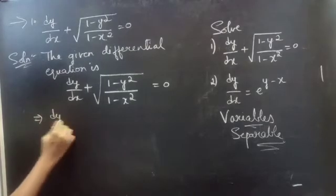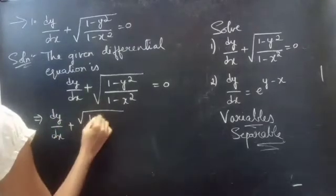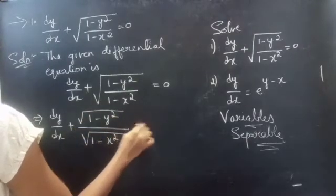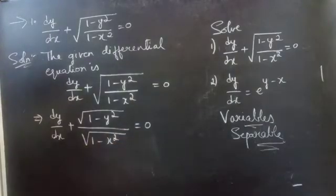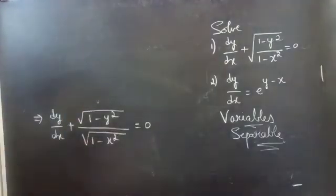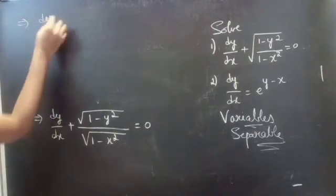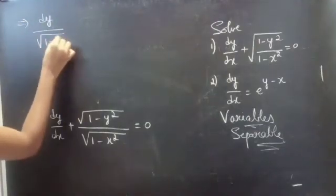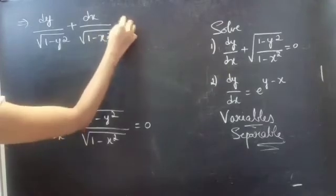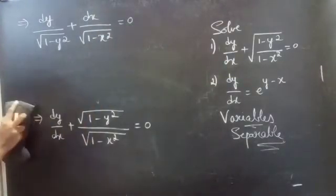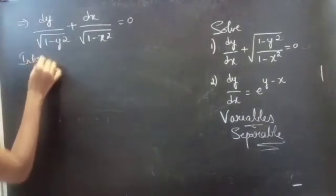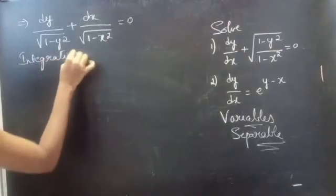You could write it as dy/dx plus square root of (1 minus y squared) over square root of (1 minus x squared) equals to 0. So you could write it as dy over square root of (1 minus y squared) plus dx over square root of (1 minus x squared) equals to 0. Here the variables are separable.